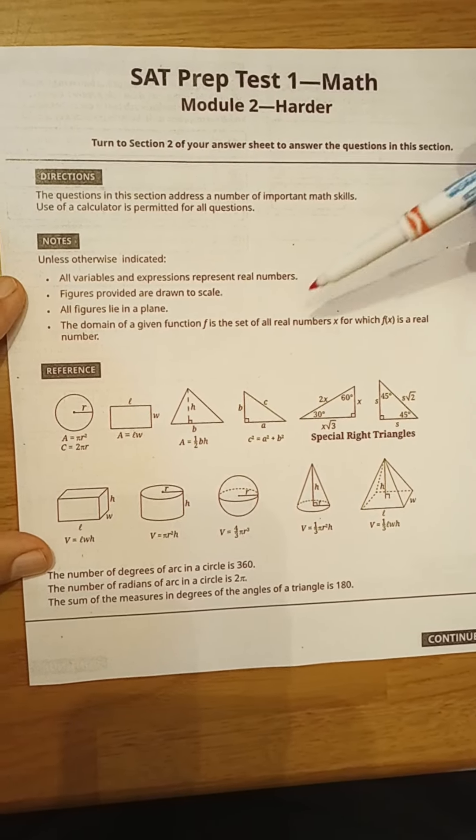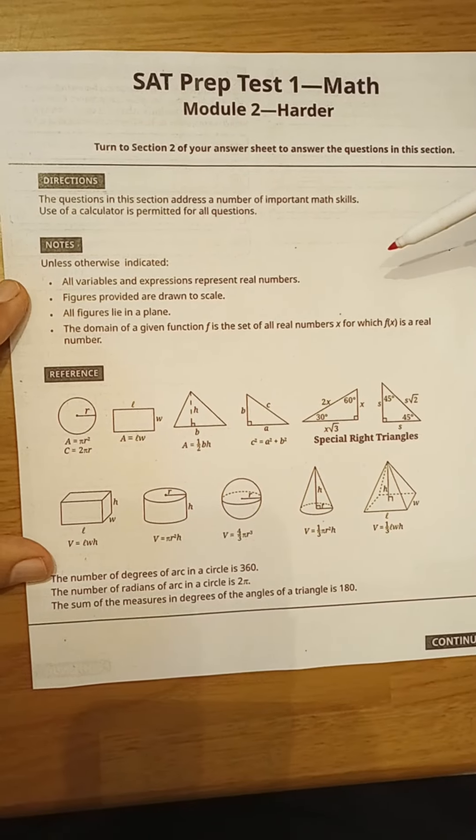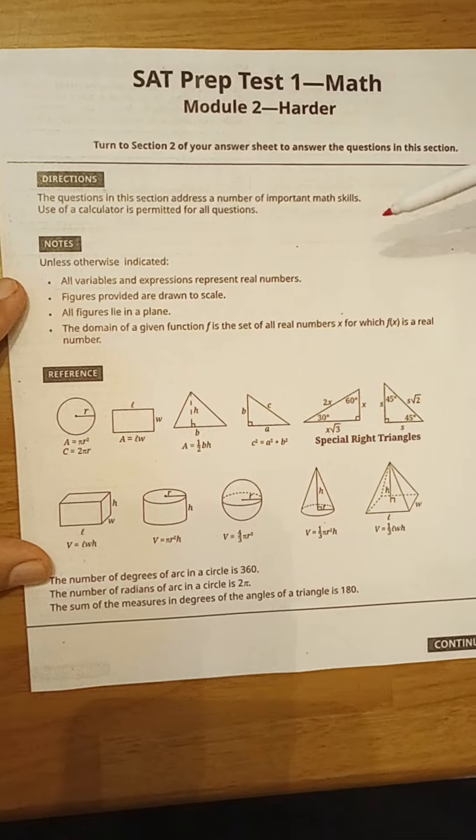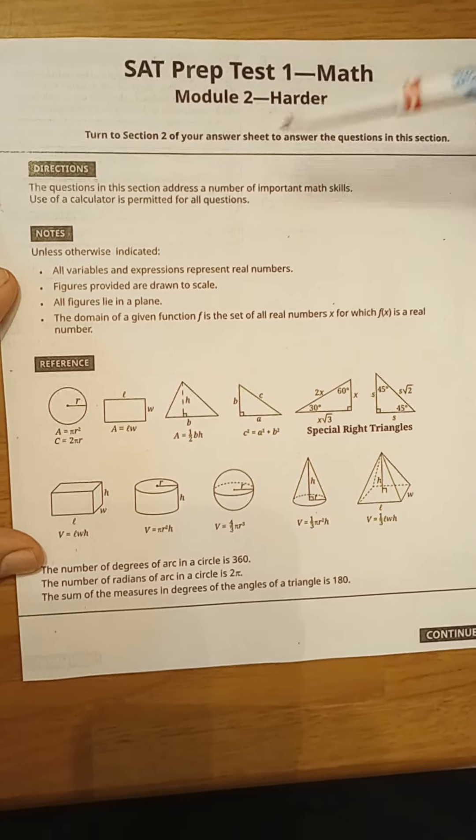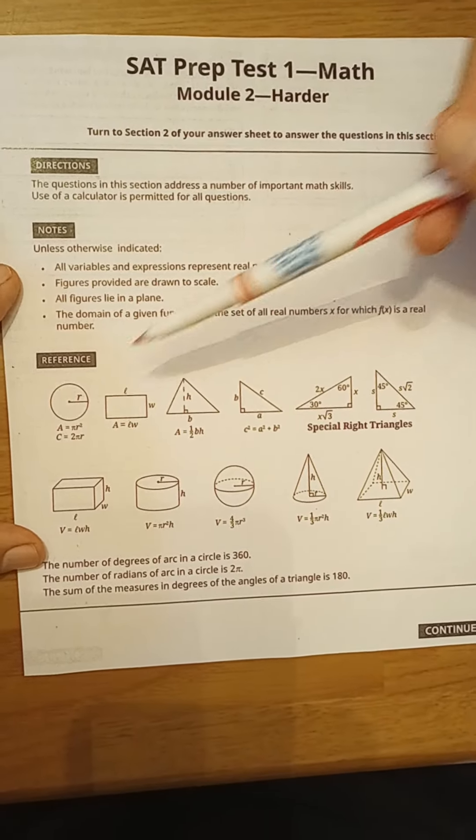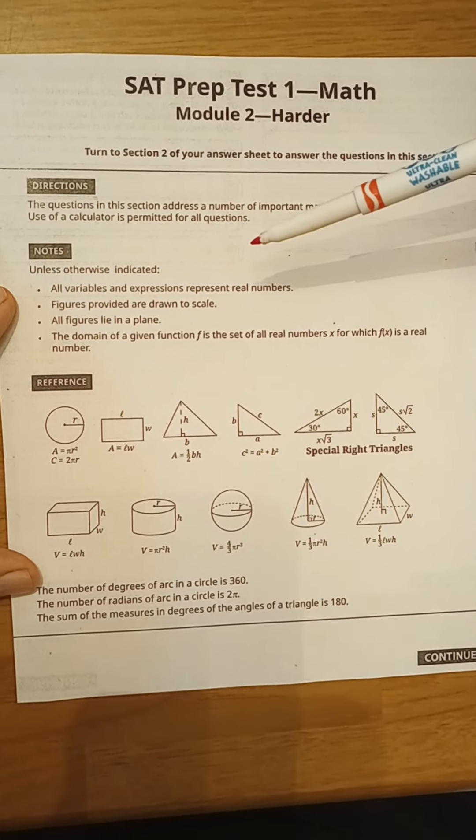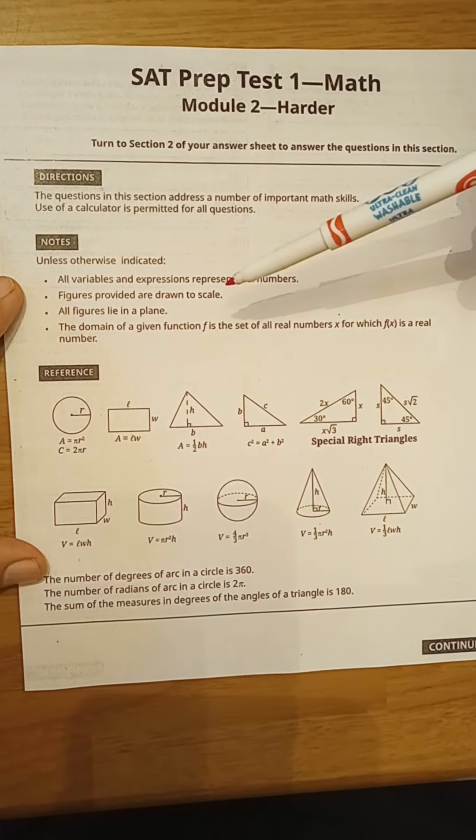Unless otherwise indicated, all variables and expressions represent real numbers. Figures provided are drawn to scale, and that's new. There are sometimes figures not drawn to scale on the paper test. All figures lie in a plane, and the domain of a given function f is the set of all real numbers x for which f of x is a real number.